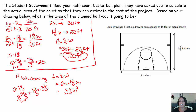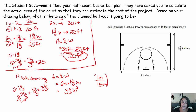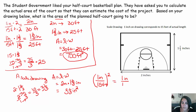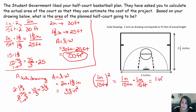I can take that scale drawing area and convert it to the actual area. But I only know one inch equals 15 feet — not square inches to square feet. The nice thing is I can square the scale. One inch over 15 feet, times itself: one times one is one, inches times inches is square inches, 15 times 15 is 225, feet times feet is feet squared. So one square inch equals 225 square feet.